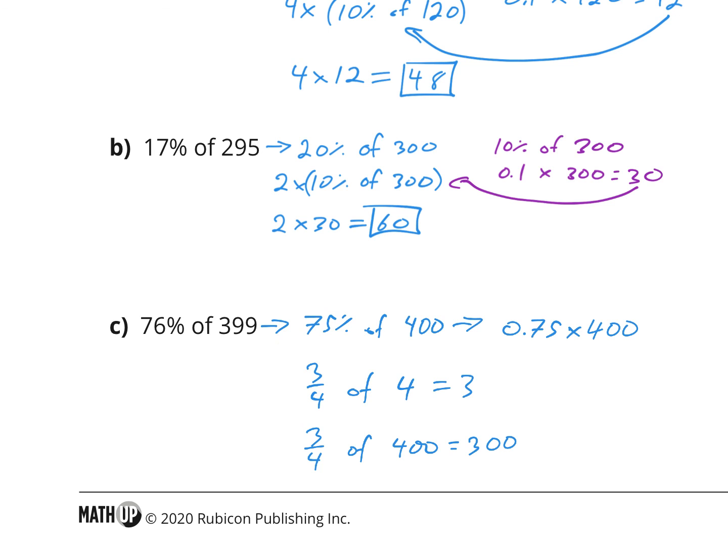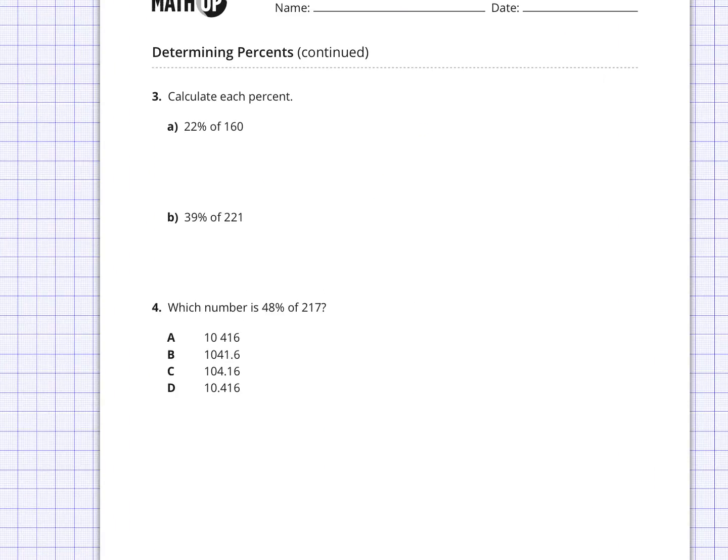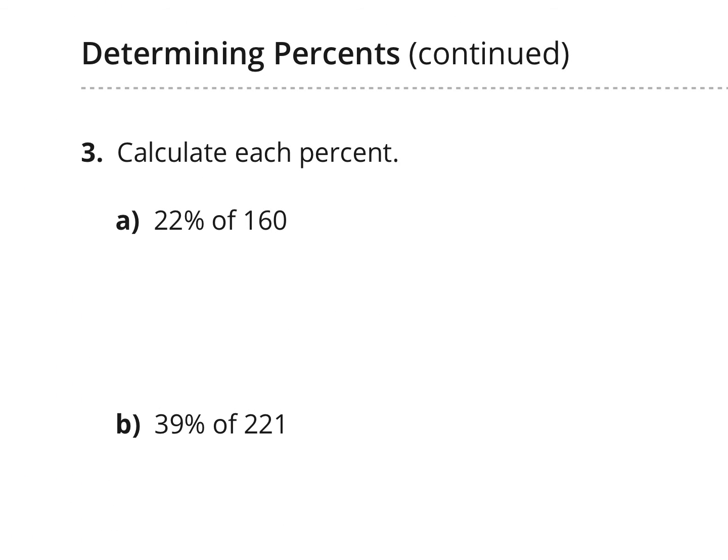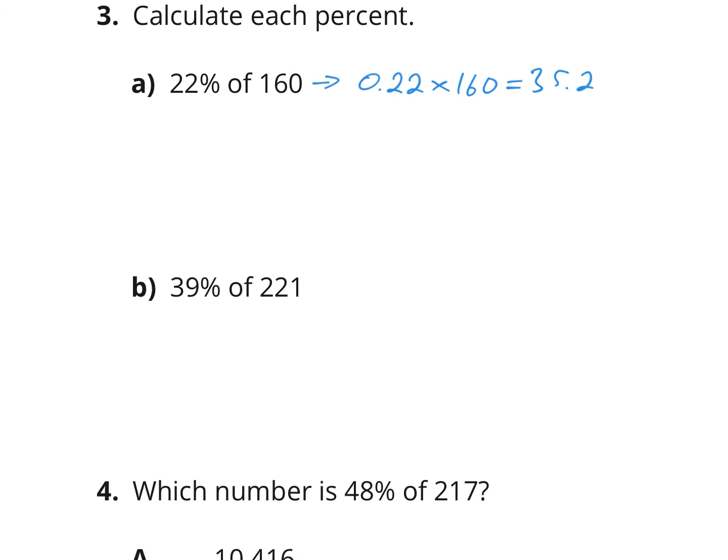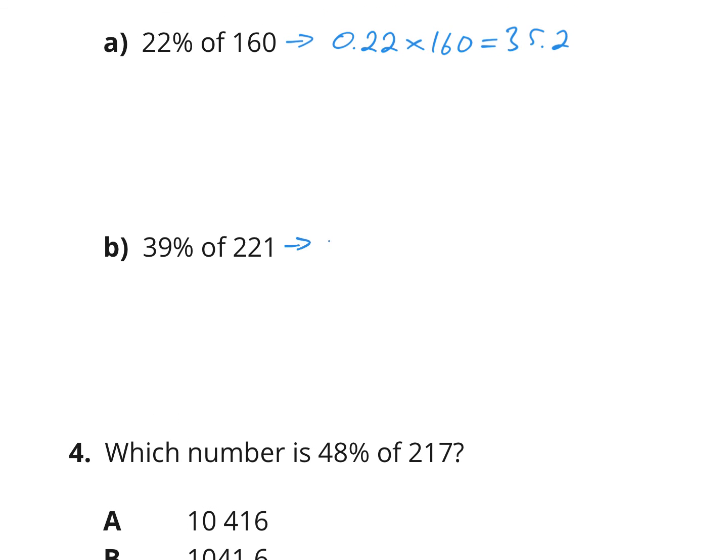Let's do the next page. Here we have to calculate each percent. So here, all we need to do is change this into a decimal, 0.22. The of becomes a multiplication sign, and that stays 160. And if we type that into the calculator, we find the answer is 35.2. And when we have 39% of 229, we change it into a decimal by moving the decimal over two spaces to the left, multiply it by 221. And when we type that in to our calculators, we get 86.19.